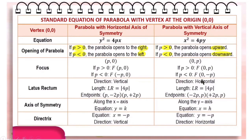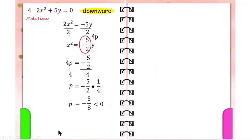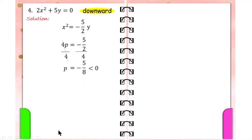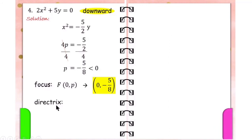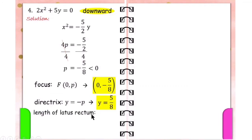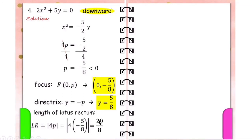Using these values: the focus is at (0, p), which is (0, negative 5/8). The directrix is y equals negative p. Replacing p with negative 5/8, negative times negative 5/8 is positive 5/8. Then, find the length of the latus rectum by taking the absolute value of 4 times negative 5/8, which is 20/8. Reduced to lowest form, 20/8 gives 5/2.